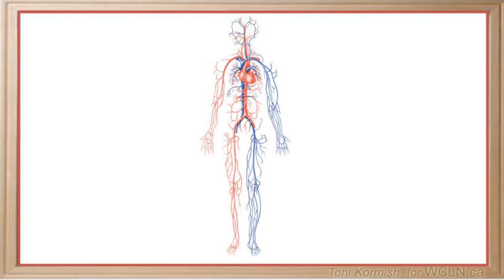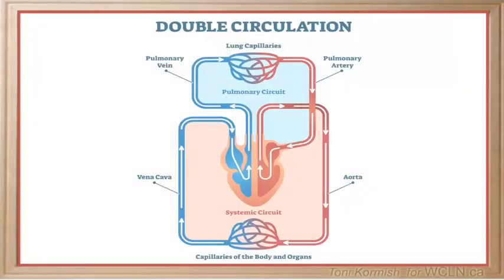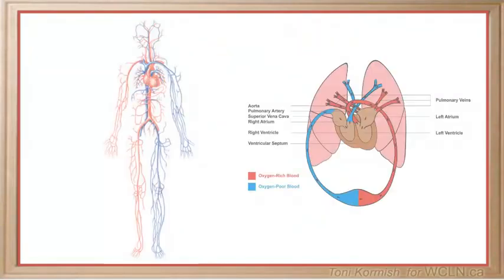Now that we've identified the major arteries and veins that you will need to know for this course, you will have to be able to trace the path of blood from one location in the body to another. Remember that if you are tracing the path of blood from one organ to another, the blood always has to pass through the pulmonary circuit. So let's look at an example.